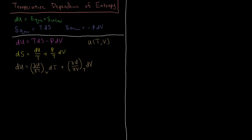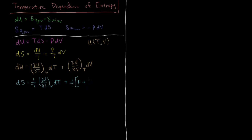If we substitute that expression for dU into our entropy expression and carry out the algebra, we end up with: dS = (1/T)(∂U/∂T)_V dT + (1/T)[p + (∂U/∂V)_T] dV. There are two terms that depend on dV: one coming from dU and one coming from p.